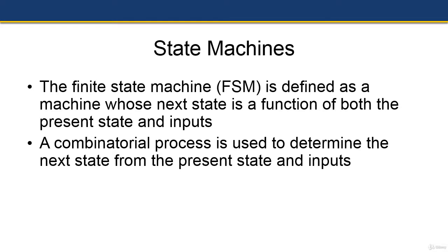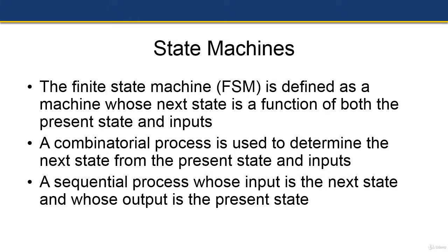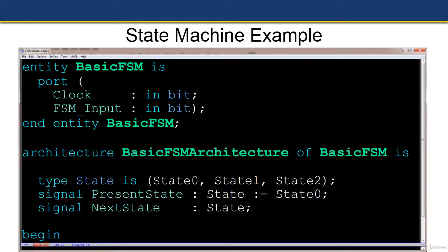A sequential process takes the next state as its input and outputs the present state, so that when a clock edge happens we switch from one state to the next. Here's an example of a basic state machine.